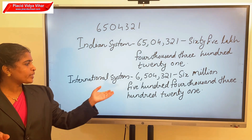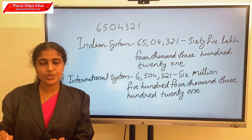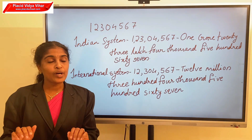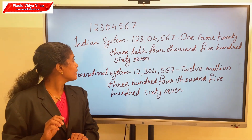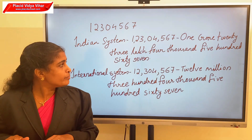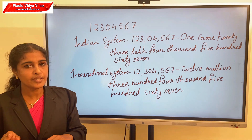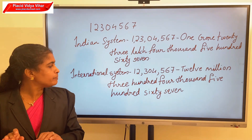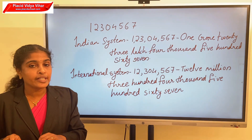In the international system, we put commas in groups of three: 6,504,321. Next, consider the 9-digit number with digits 1, 2, 3, 0, 4, 5, 6, 7. In the Indian system: 1,23,04,567. In the international system: 1,23,04,567 becomes 20,304,567.